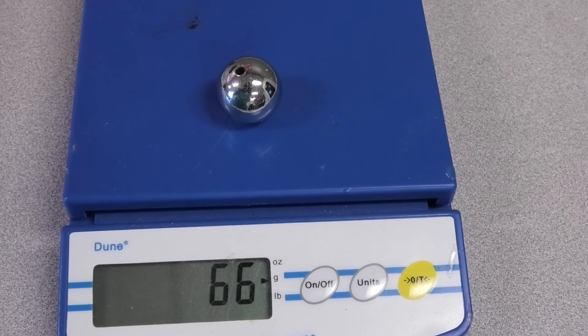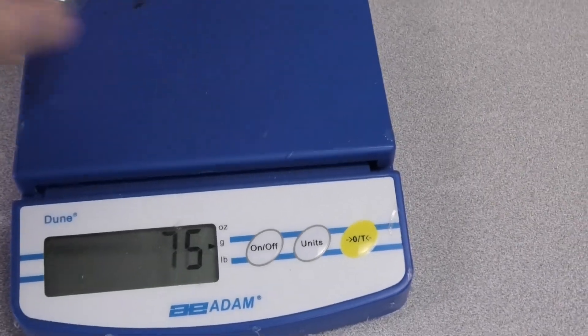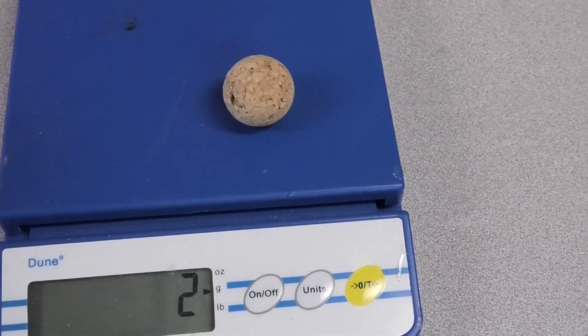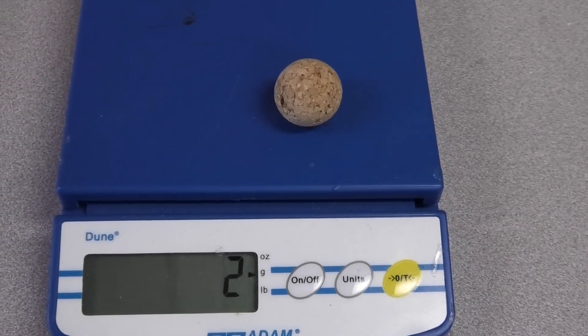Steel comes out to about 66 grams. The cork dry without water comes out to an amazing 2 grams.